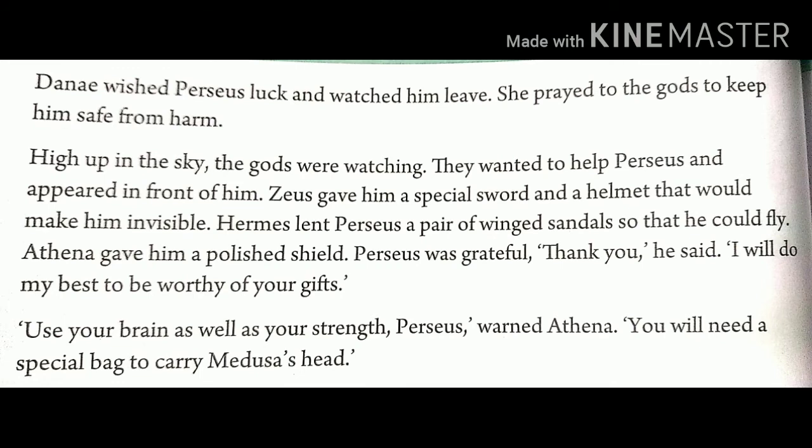Danae wished Perseus luck and watched him leave. She prayed to the gods to keep him safe from harm. High up in the sky, the gods were watching. They wanted to help Perseus and appeared in front of him. Zeus gave him a special sword and a helmet that would make him invisible. Hermes lent Perseus a pair of winged sandals so that he could fly. Athena gave him a polished shield. Perseus was grateful. 'Thank you,' he said. 'I will do my best to be worthy of your gifts.' Athena warned him: 'Use your brain as well as your strength.'